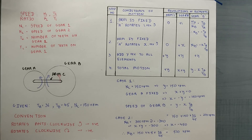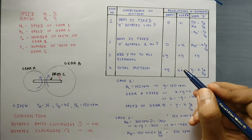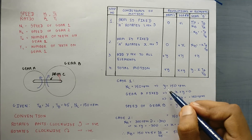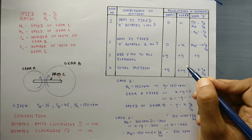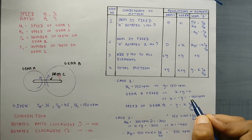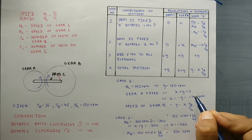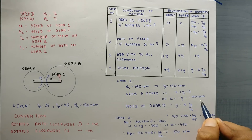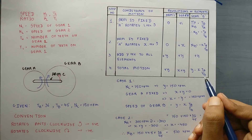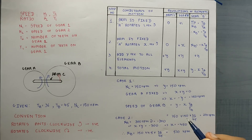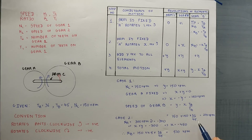There are two cases. The first case: the arm rotates at 150 RPM in the anti-clockwise direction and gear A is fixed — determine the speed of gear B. According to the table, the speed of arm C is +Y, so Y = 150 RPM. Since gear A is fixed, its speed equals zero: X + Y = 0, therefore X = minus Y = minus 150 RPM. To find the speed of gear B: NB = Y minus X times TA by TB = 150 plus 150 times 36 by 45 = 270 RPM.